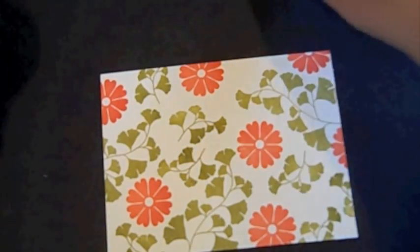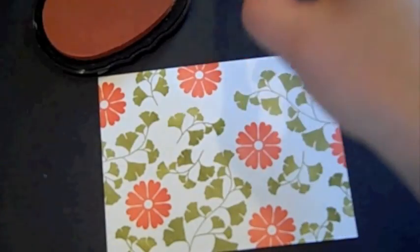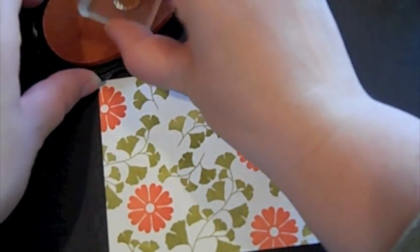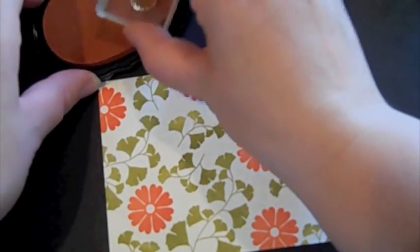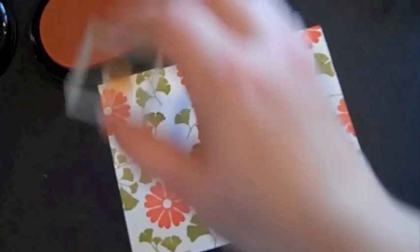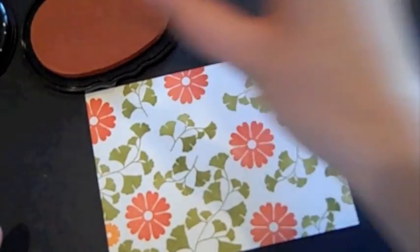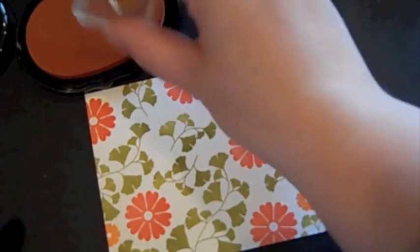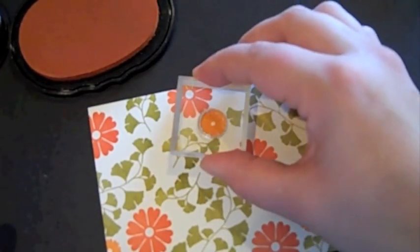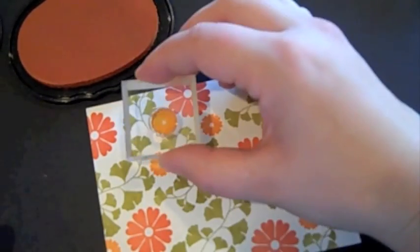I'm going to go in with Orange Zest now, and I'm going to use the smallest solid flower from Flower Fusion number seven. And I'm going to just go back in again and just fill in some of the small openings that are left.